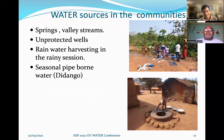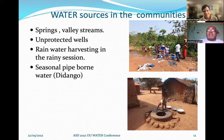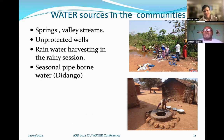In these communities, there are various water sources including springs, valley streams, unprotected wells, and rainwater harvesting during the rainy season. Jidango has an obsolete pipe bond system that is seasonal, was built more than 40 years ago, and has not been able to satisfy the community recently.